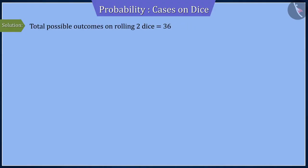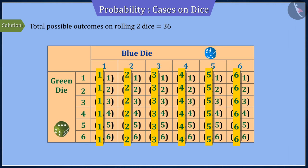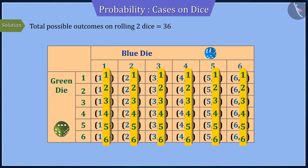We know that rolling two dice yield a total of 36 outcomes, where the first number of each ordered pair is the blue die number and the second number is the green die number.